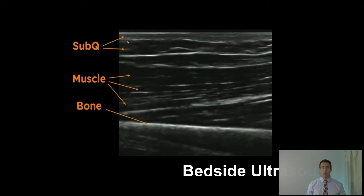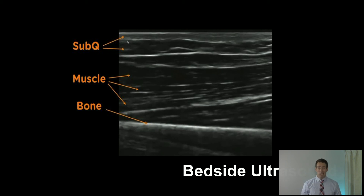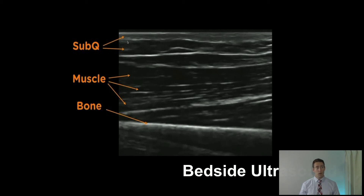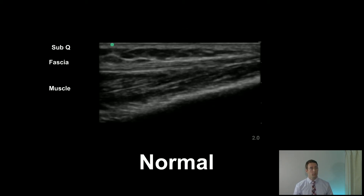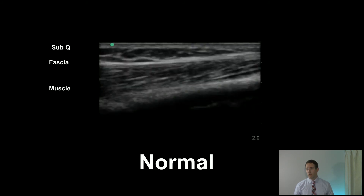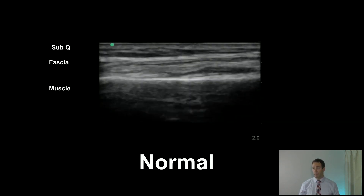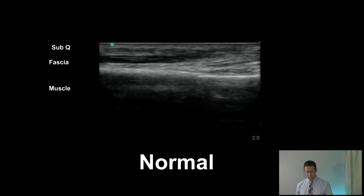Everyone should get a bedside ultrasound when they have a skin and soft tissue infection. It's simple and really easy - all you need is a linear transducer and some gel. Here's what the anatomy looks like: you're looking for that lacy, reticular pattern of the sub-Q, followed by that hyperechoic line of fascia. Beneath that you get muscle, which looks striated, and then bone, which has a really hyperechoic line. Let's look at it in a video clip. You can see the sub-Q at the top, lacy and reticular, then fascia beneath it, and then muscle. Pretty straightforward and easy - we're not asking you to find anything too advanced.